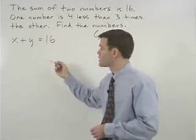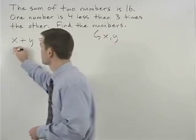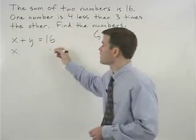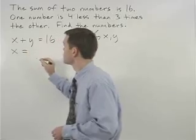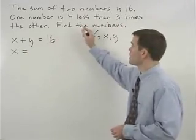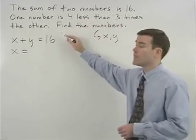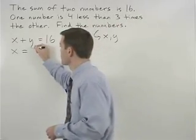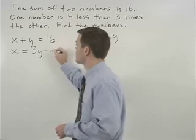One number, that's x, equals—and remember, four less than three times the other does not mean four minus three y. It means three y minus four.